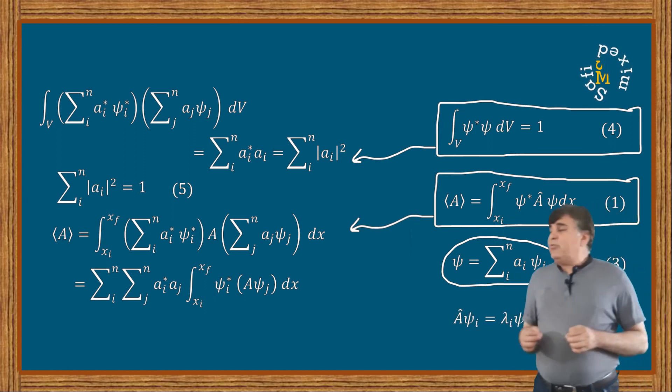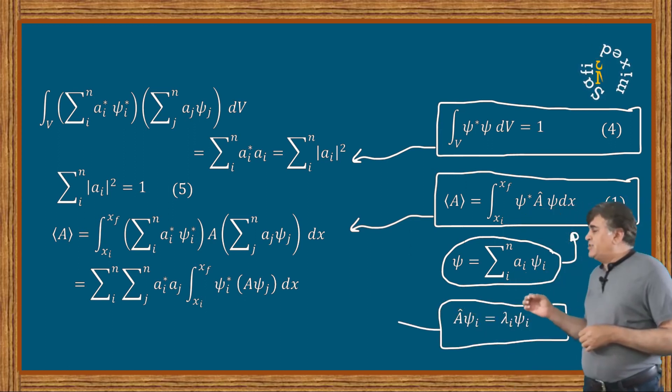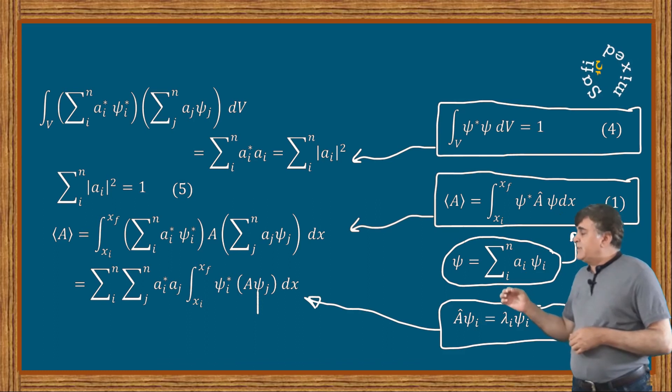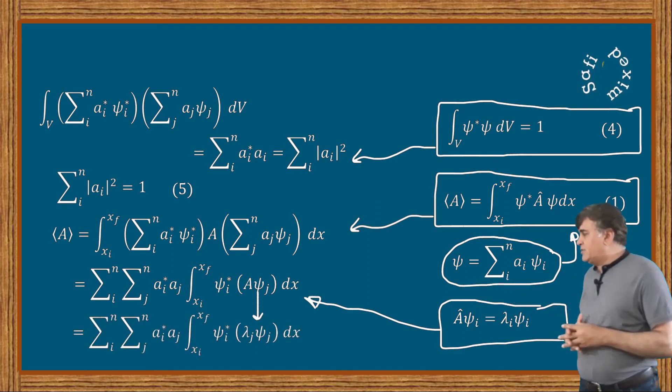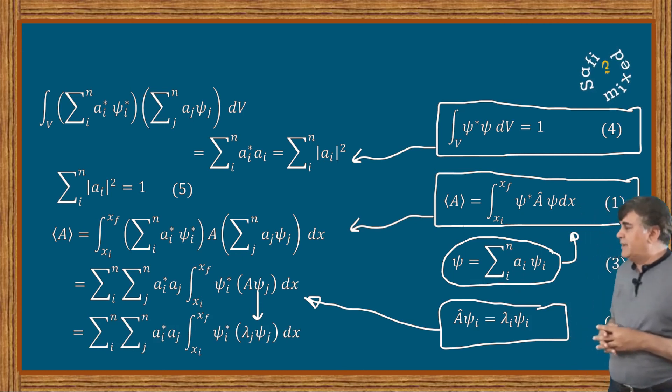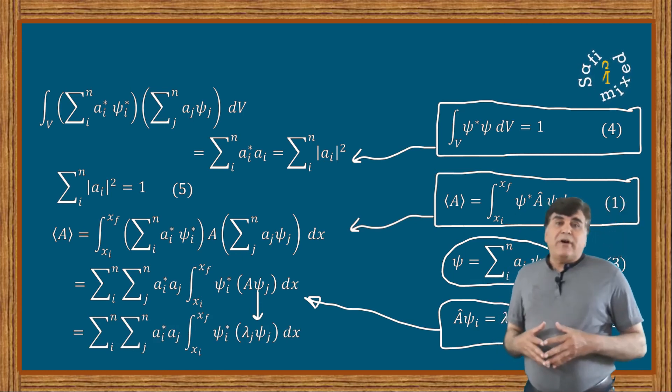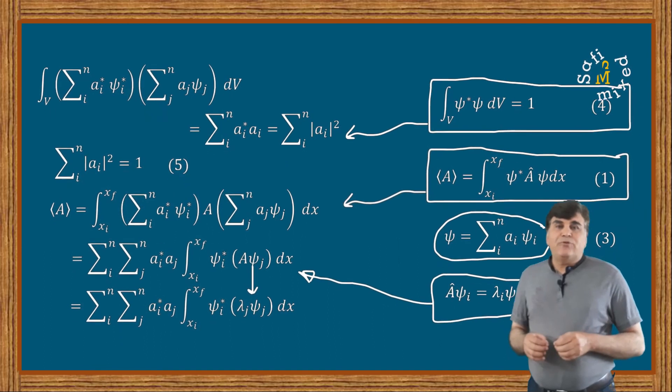And using the eigenvalue equation, A times ψⱼ can be replaced with λⱼ ψⱼ, like I have done in the next line of this equation. And since the eigenvalues are independent of position, therefore I can take them out of the integral.